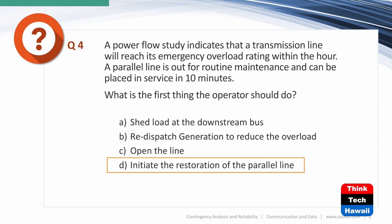Next question: A power flow study indicates that a transmission line will reach its emergency overload rating within the hour. A parallel line is out for routine maintenance and can be placed in service in 10 minutes. What is the first thing the operator should do? Note that the line is not currently overloaded — it will reach that rating within the hour.